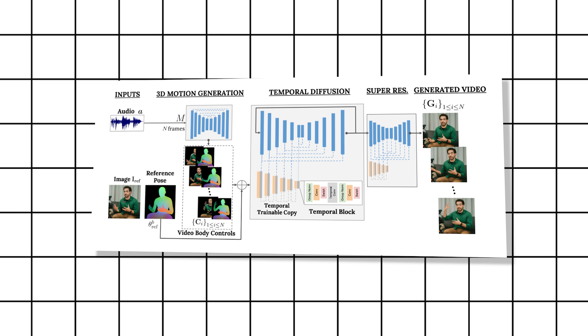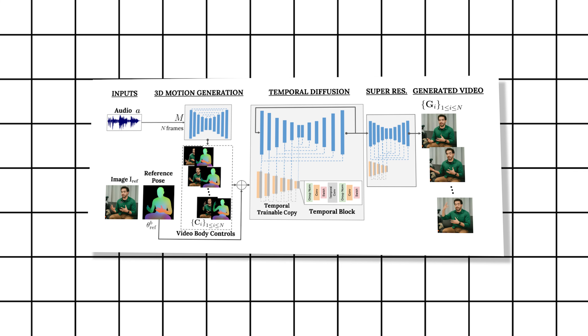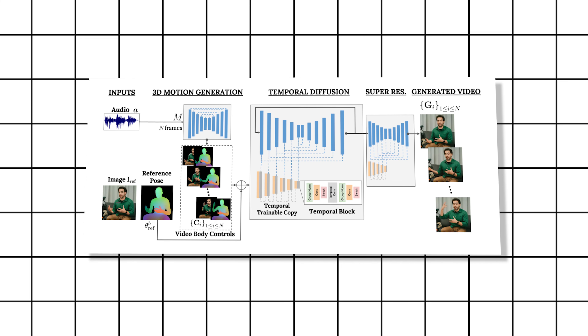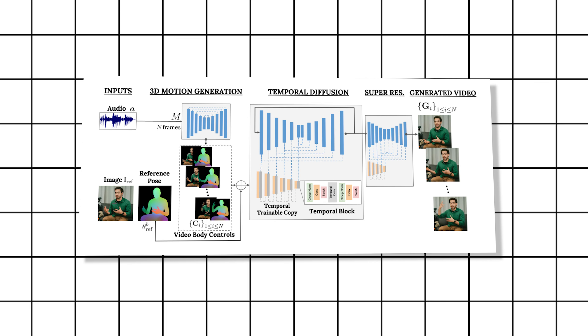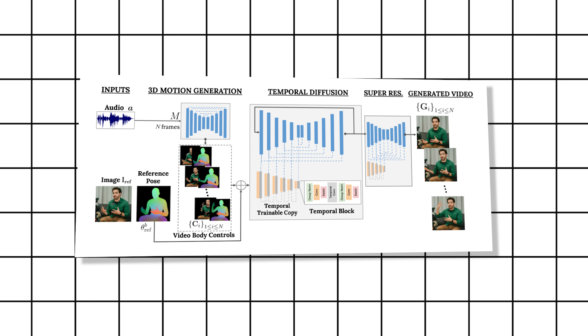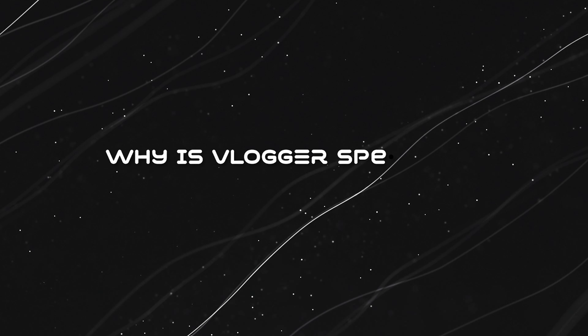Vlogger is like two models working together. One focuses on creating realistic human movement from the image, while the other uses the text and audio to control the person's face and body. So you get a natural-looking video where the person speaks and moves just like they would in real life.